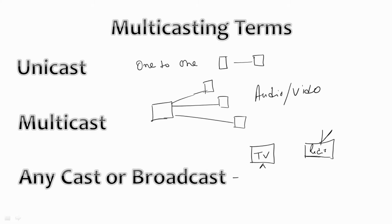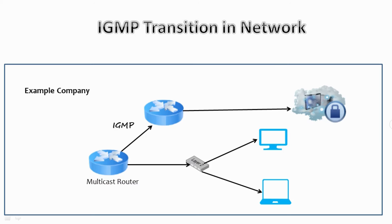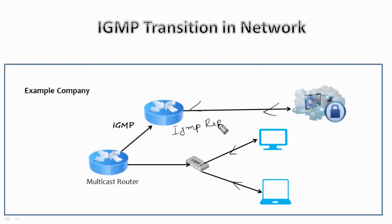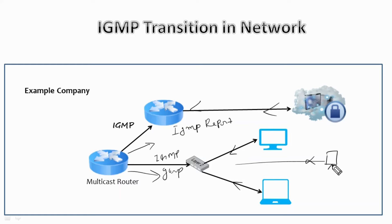Here we have a multicasting router, and these are devices that have joined the multicast group — we have a router, PCs, a switch, and a cloud network. When a device wants to receive multicast traffic, it joins a specific multicast group by sending an IGMP report message to its local network. The router uses this information to forward multicast traffic only to devices that are part of that multicast group, reducing unnecessary network traffic.